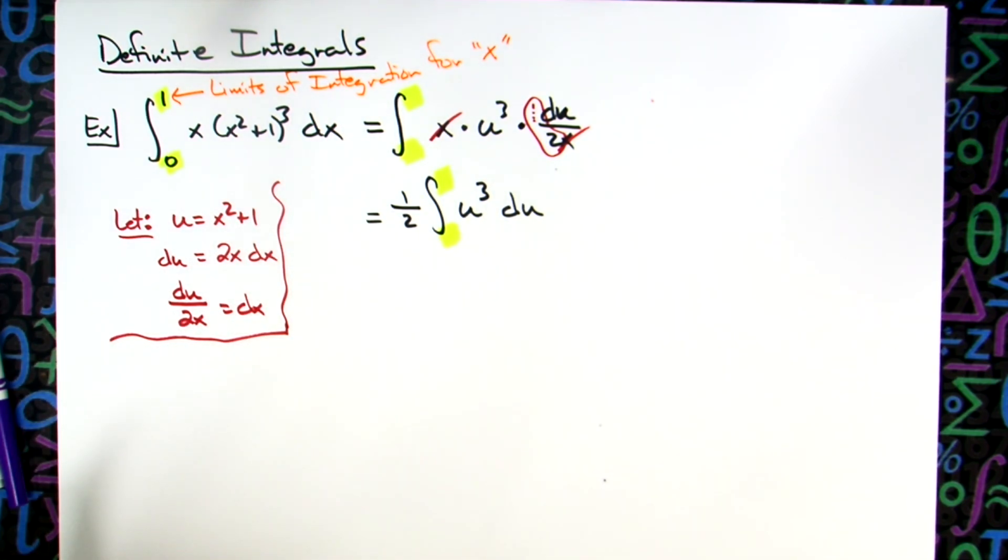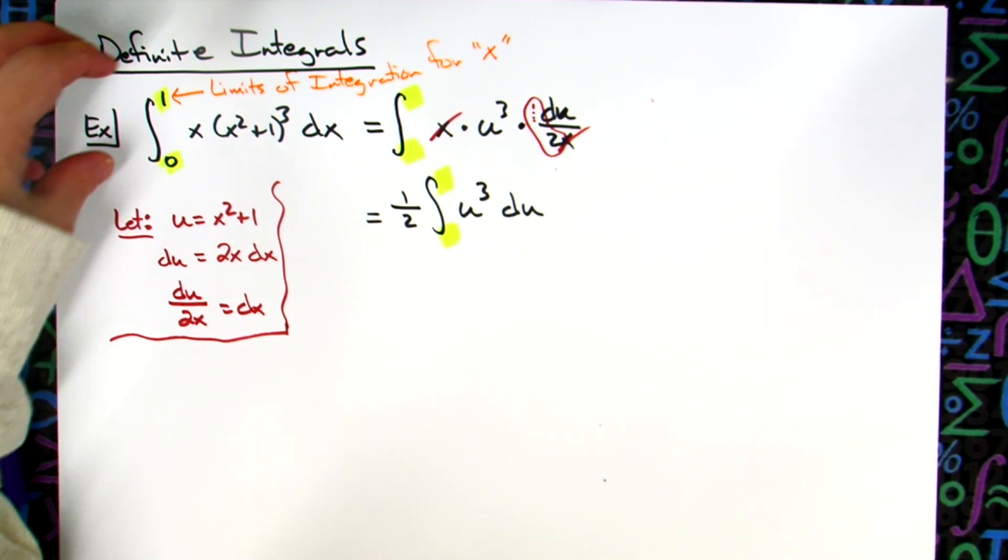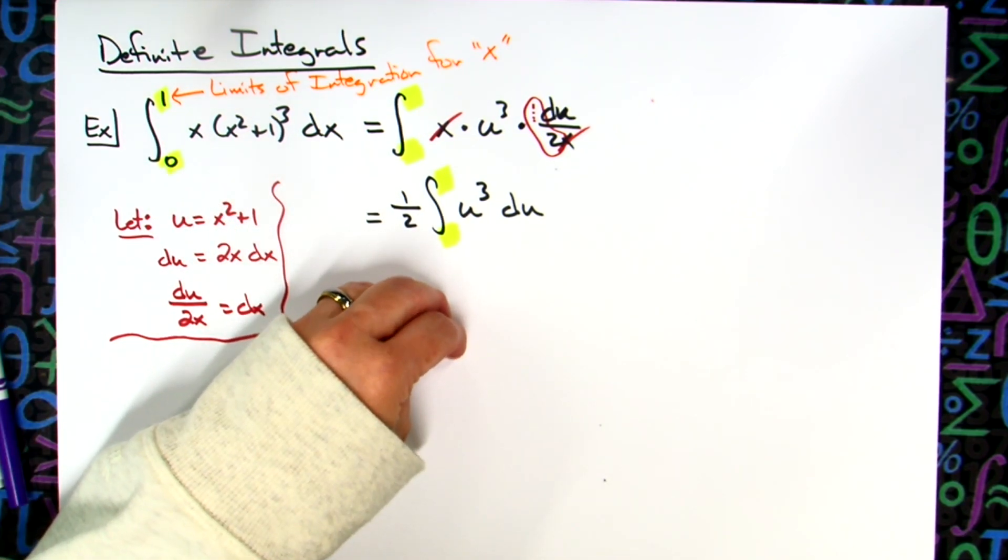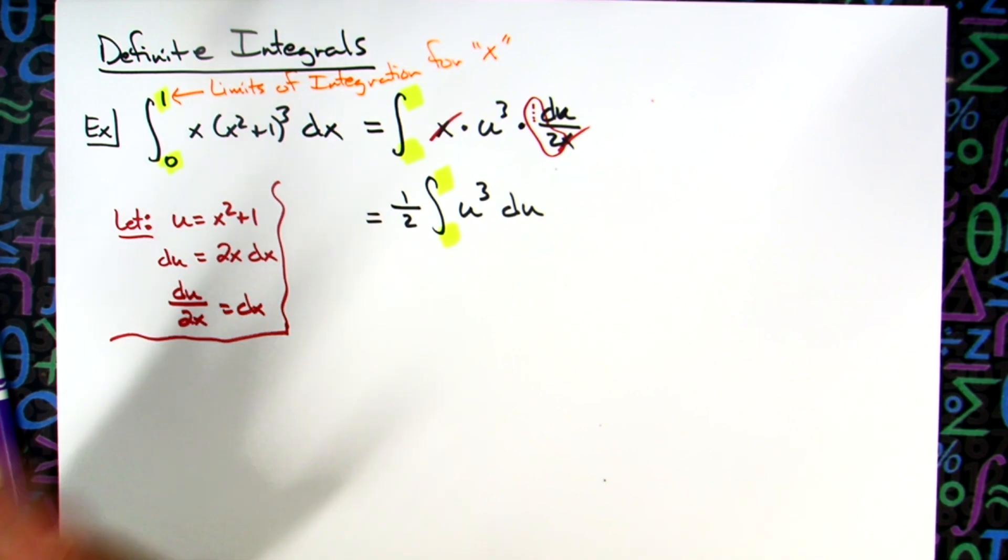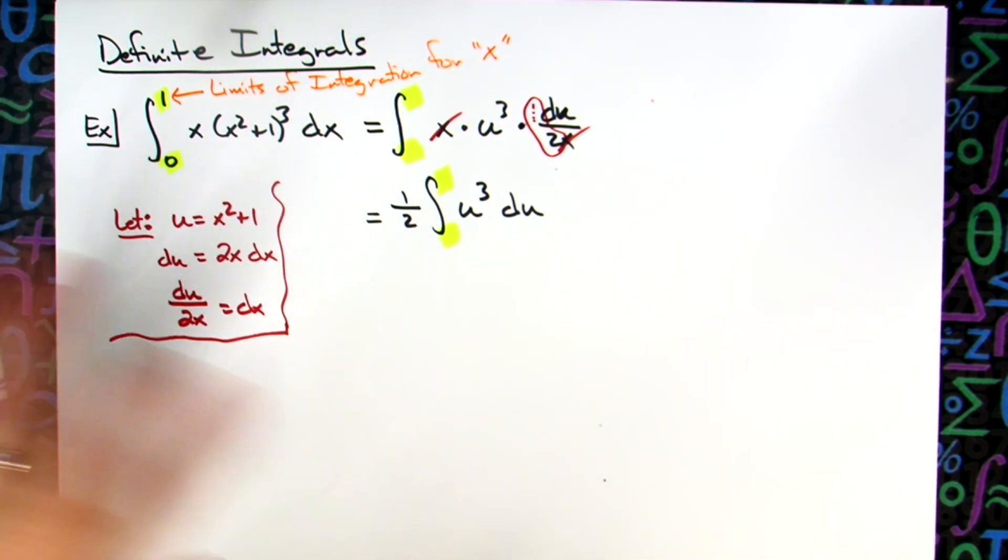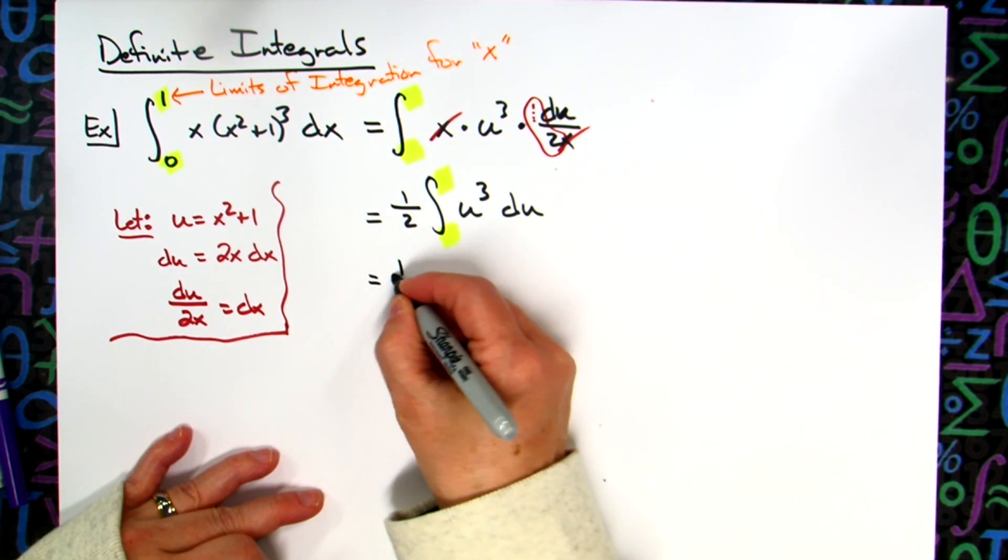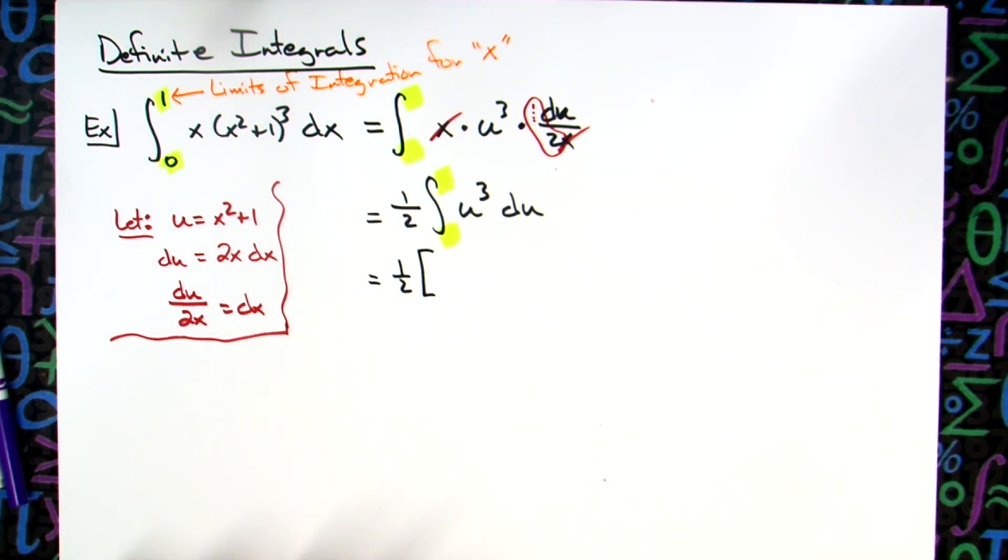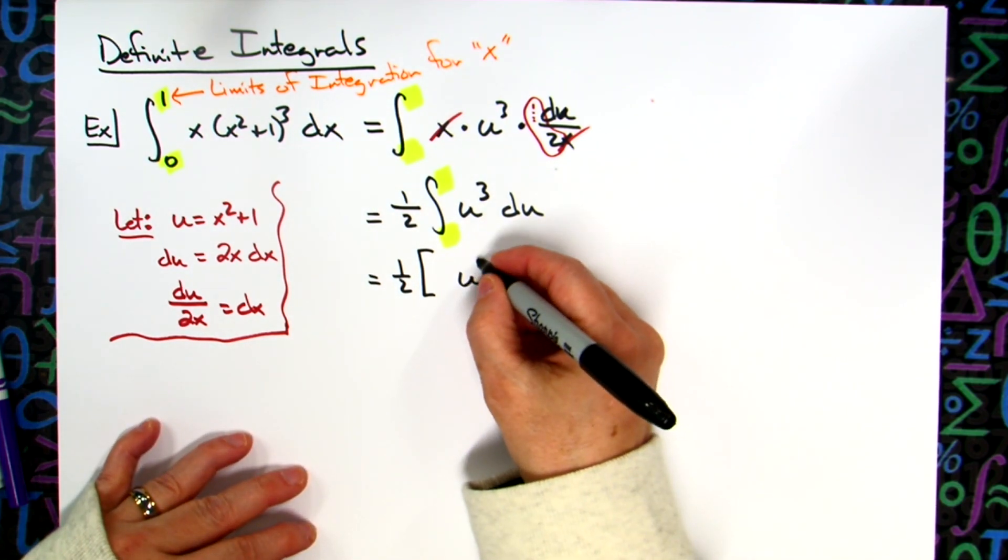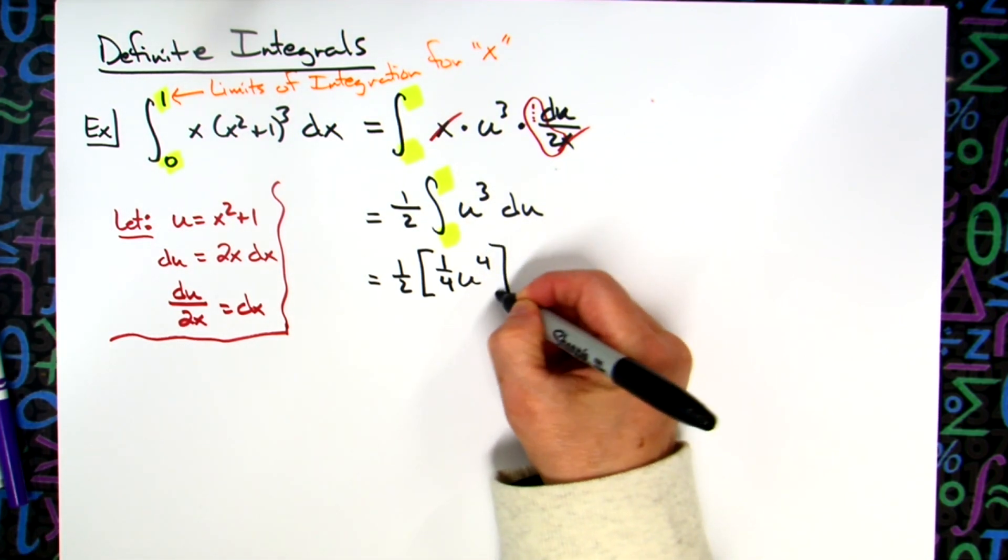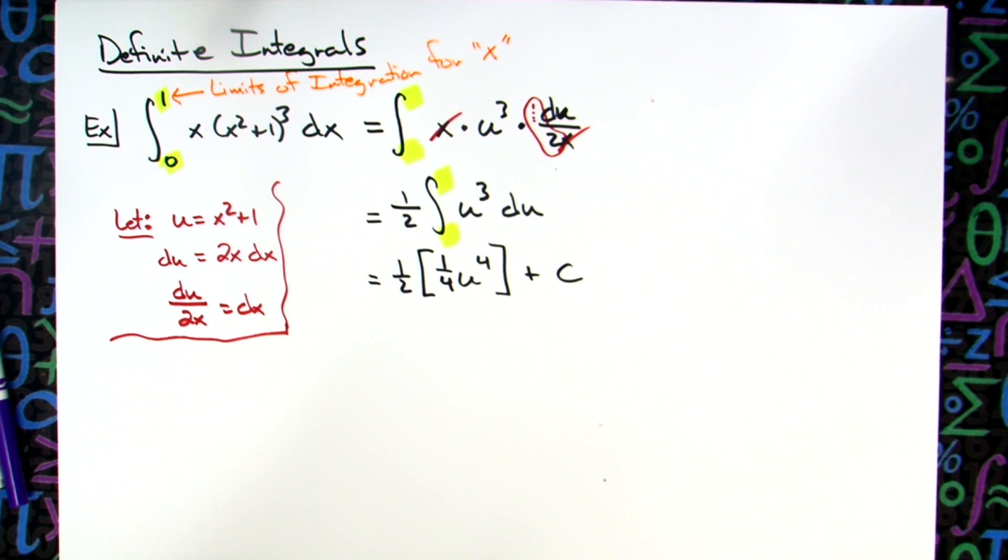A little bit later, I will show you how to change limits of integration for x and change them to limits of integration for u. But right here at the beginning, let's just learn we got to get rid of them because they are limits of integration for x. So we're going to integrate like normal. We'll have the one half sitting out in front. Add one to the exponent, I'll have u to the fourth. That'll give me one fourth in front. And then I usually go ahead and put my plus C there because I'm doing an indefinite integral at that point.